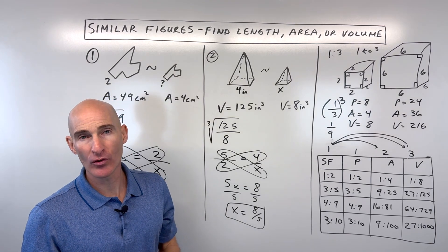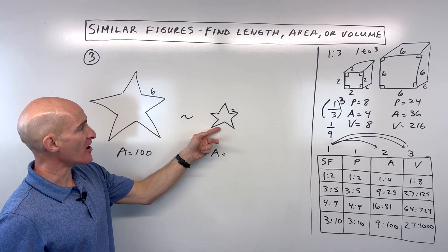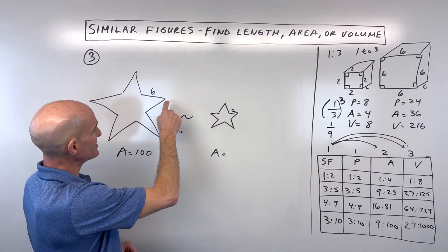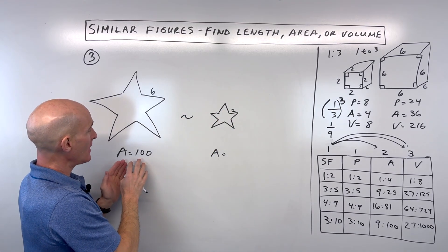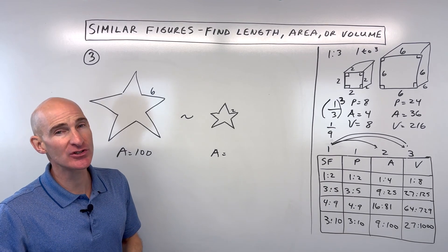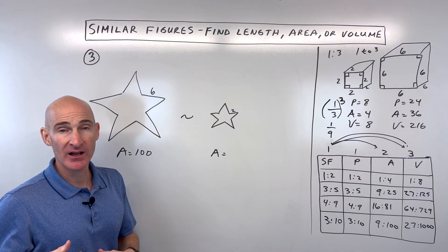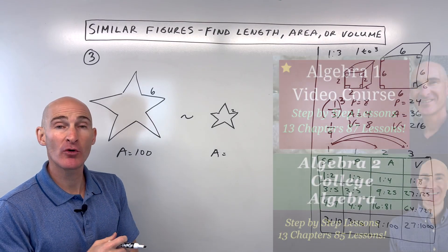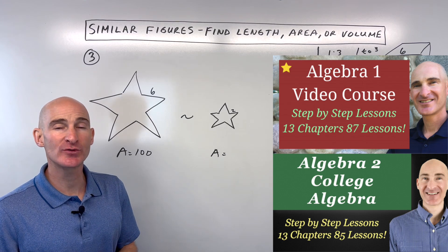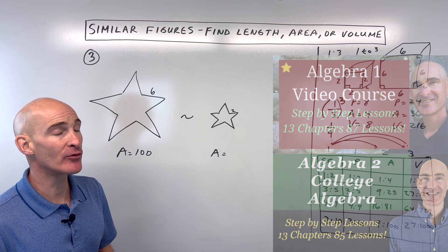Example 3: Two similar stars with side lengths 6 and 2, and the larger has an area of 100. Try this one yourself. Also, check out my Algebra 1 and Algebra 2 video courses linked in the description if you find this style of explanation helpful.